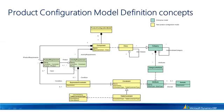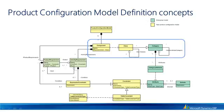The root concept in the product configuration model definition concepts is the product configuration model. The product configuration model will have an association with one component, which is the root component of the model. It may help to view the component, class, and category as one concept. The category concept is shared between product configuration and the product catalog feature, which is in the supply relationship management area, but it is not surfaced anywhere in the product configuration feature as such. So category can be conceived as a component for this.